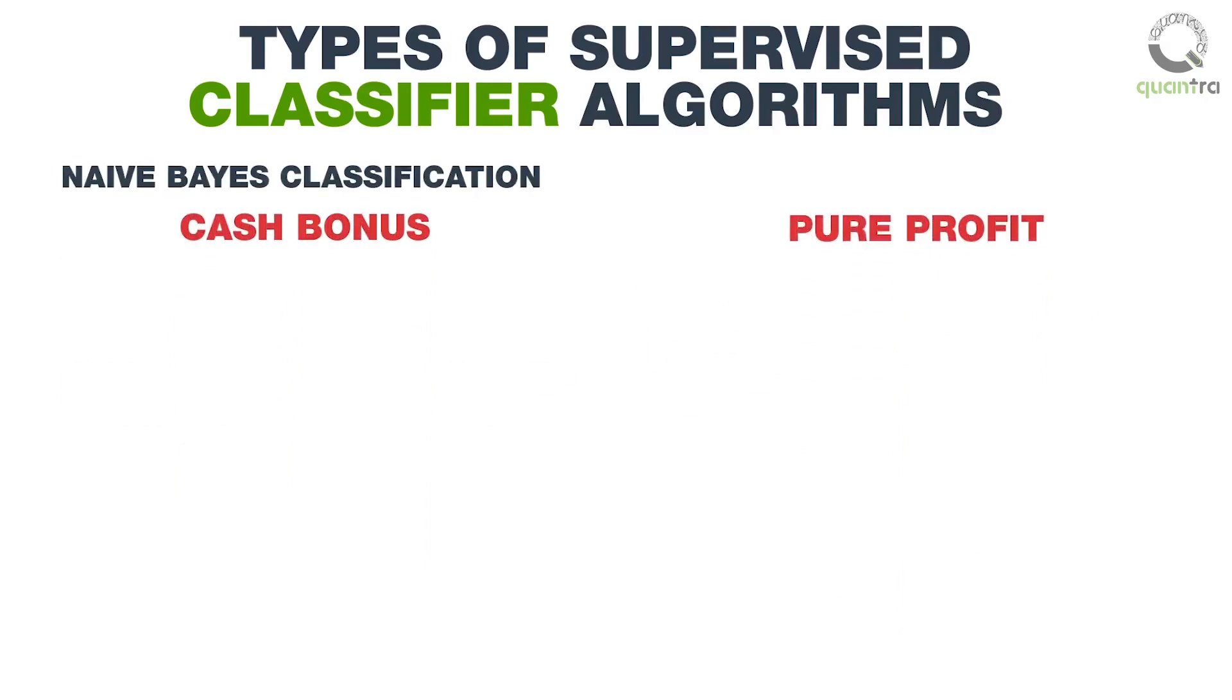Consider the example of classifying an email as spam or not. Probabilities that a mail is spam, knowing that the words like cash bonus, pure profit, etc. are in it, are determined. Then these probabilities are combined using the formula on the screen.